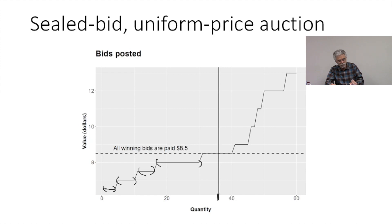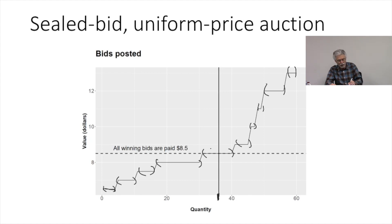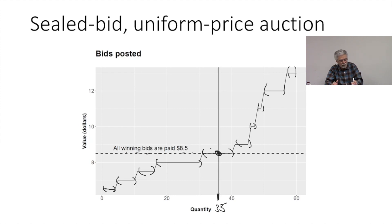The sellers make their bids, and we have a stack of bids that the auctioneer has received. The auctioneer sorts them from low to high and starts accepting bids up to the point where the auctioneer has the 35 megawatt hours needed for this five-minute period. The auctioneer then stops accepting bids, and the price is set — in this case the last unit accepted and the first unit rejected are the same — at $8.50.